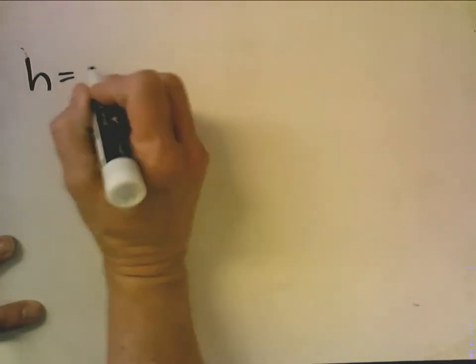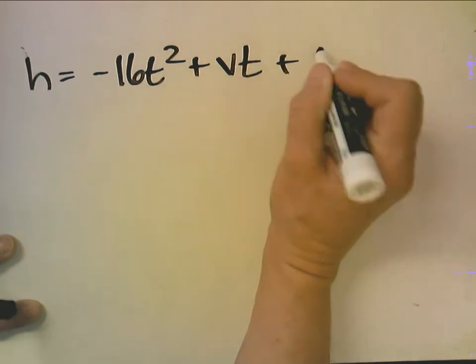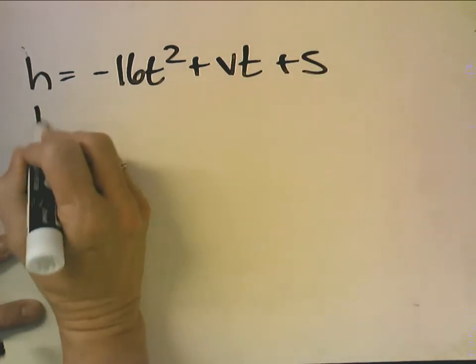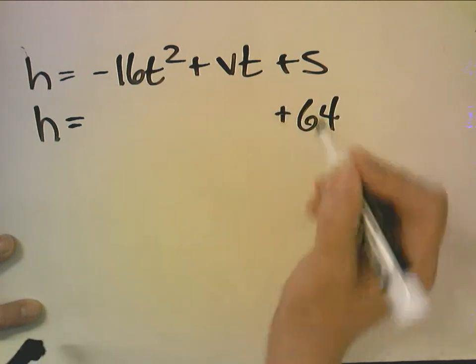Now number six says a window washer drops a wet sponge from a height of 60 feet. After how many seconds does the sponge land on the ground? So I start with my vertical velocity equation. Now here it says it starts at a height of 64.